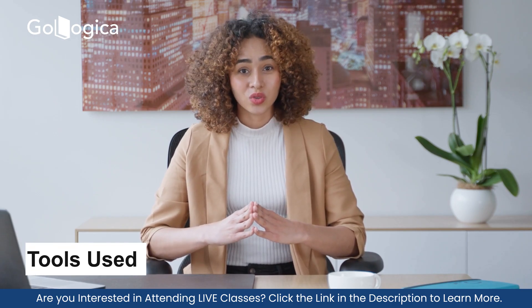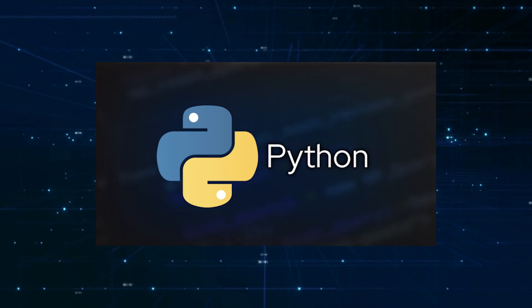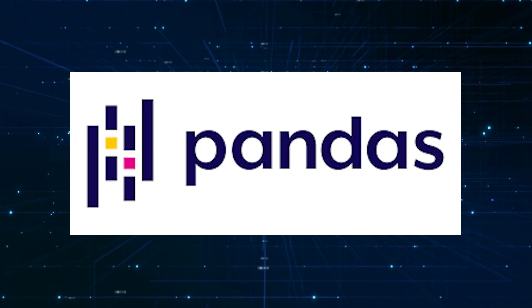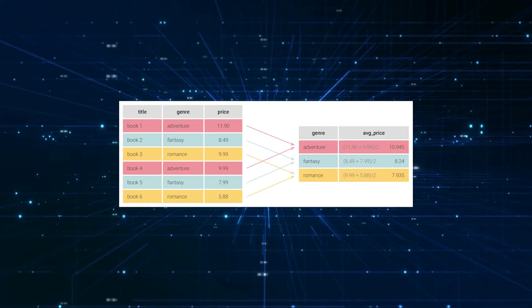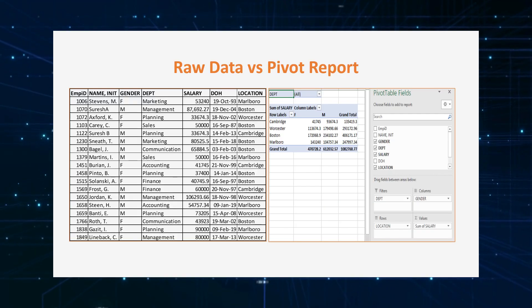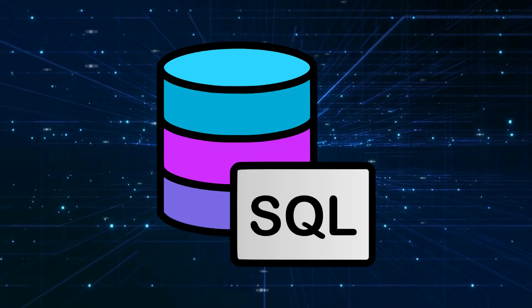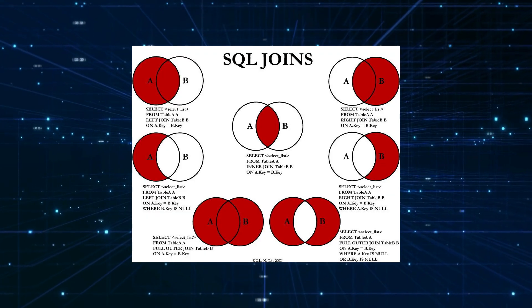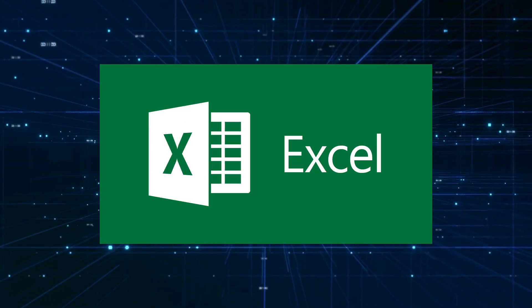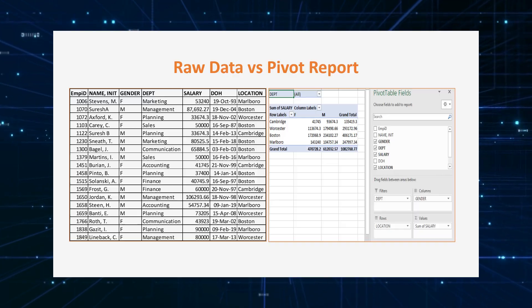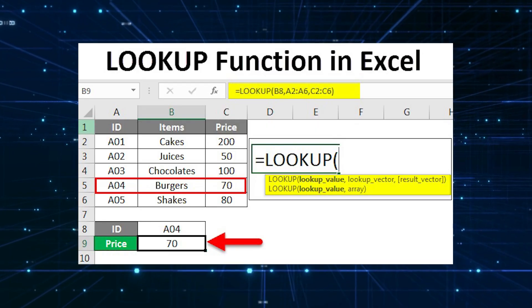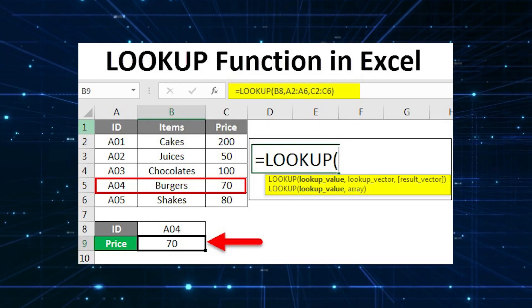Tools used for data manipulation: Python with pandas — merge, group by, pivot table; SQL — join, group by, case when; and Excel — pivot tables and lookup functions.